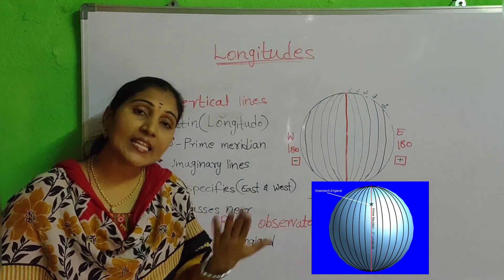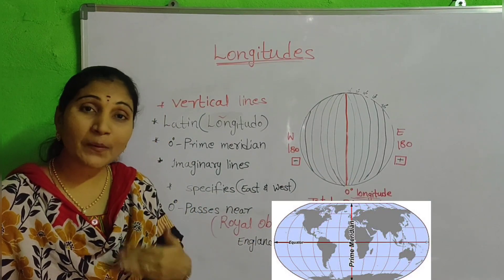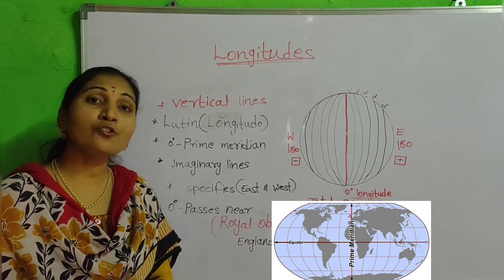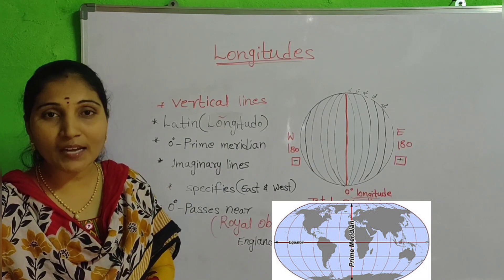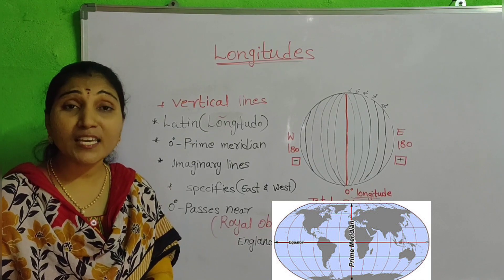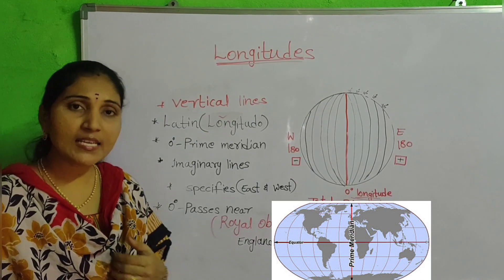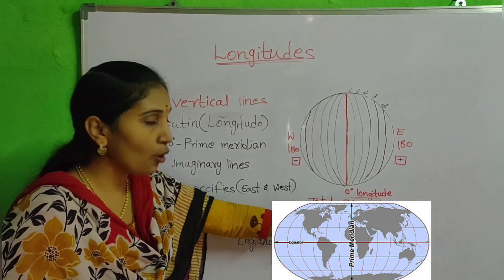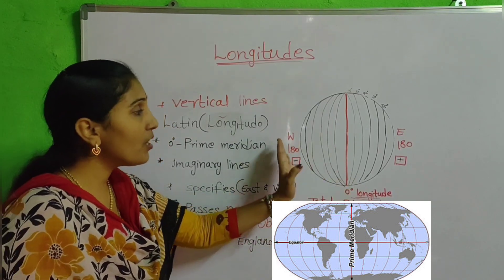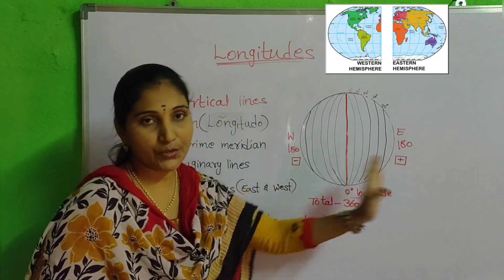We already discussed in the last class about latitude. What specifies the globe into the Northern part and Southern part? That is the equator — 0 degree latitude. In the same manner, 0 degree longitude specifies the globe into the Western part and Eastern part.